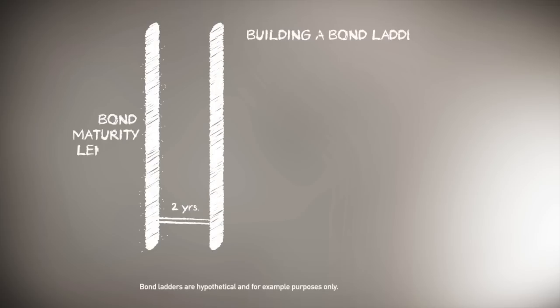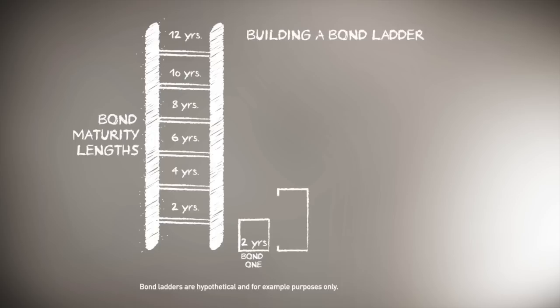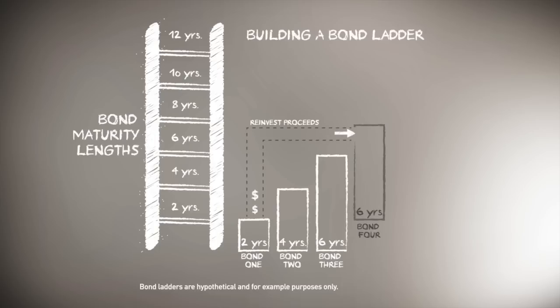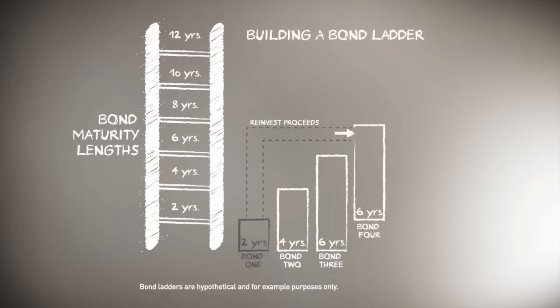A bond ladder is a bond portfolio containing several individual bonds with successively longer maturities. As the shortest bond matures, the investor uses the proceeds of the maturing bond to purchase a new bond at a longer maturity date at a potentially higher interest rate.